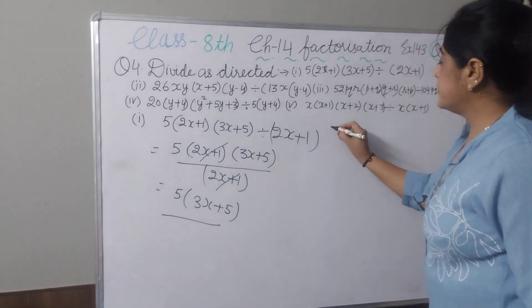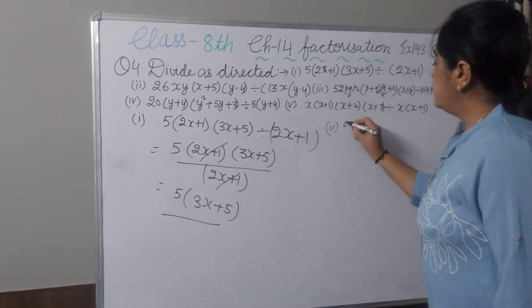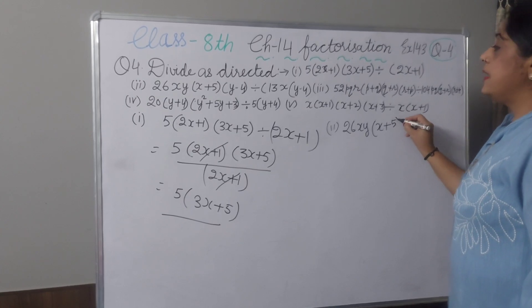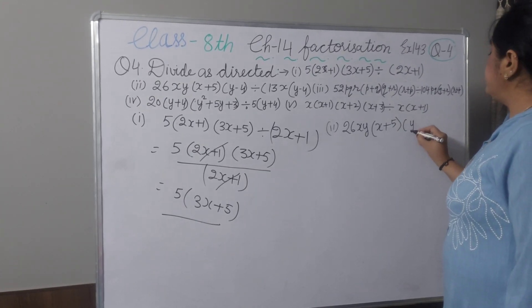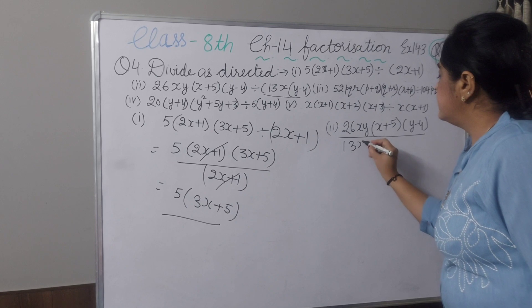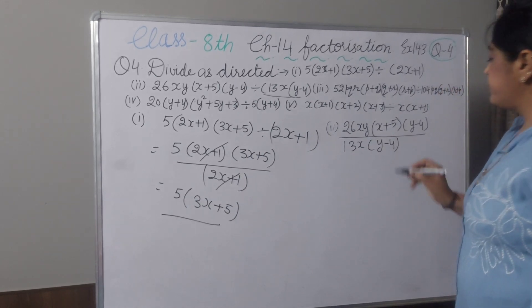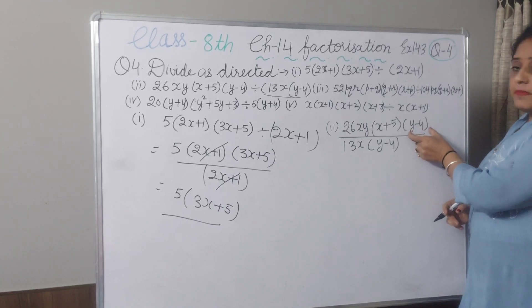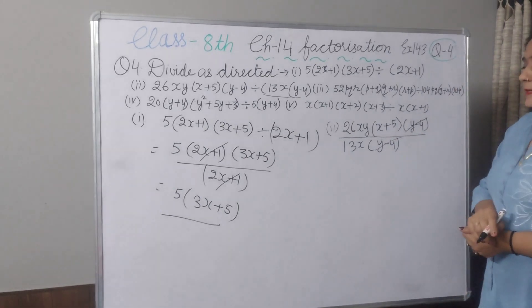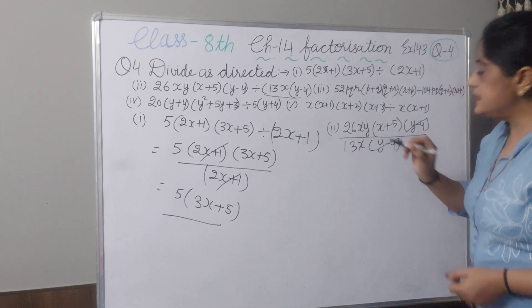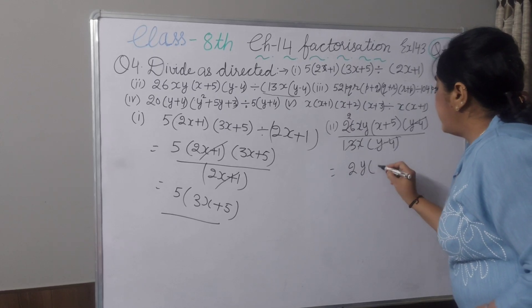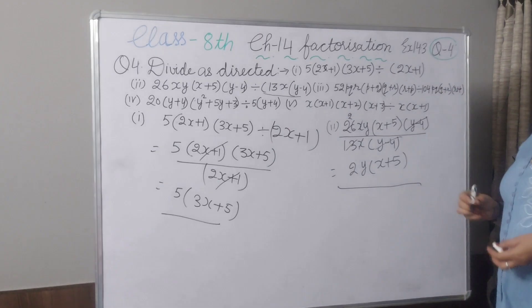Now, second part. The statement is 26xy into x plus 5 into y minus 4, and you have to divide by 30x into y minus 4. So this y minus 4 and this y minus 4 in bracket written as a product, you can cancel this y minus 4 by this. Now you can check, x can be cancelled with this x and 13 into 26. 2y x plus 5 will be your answer.